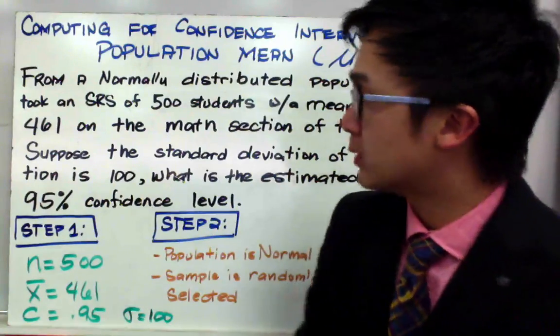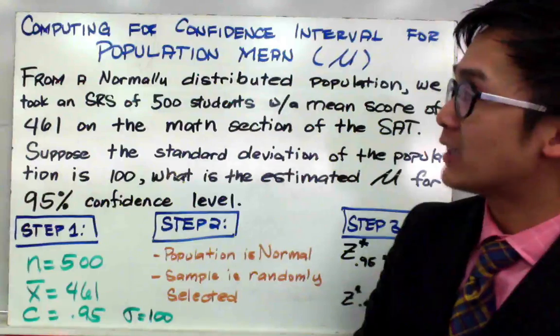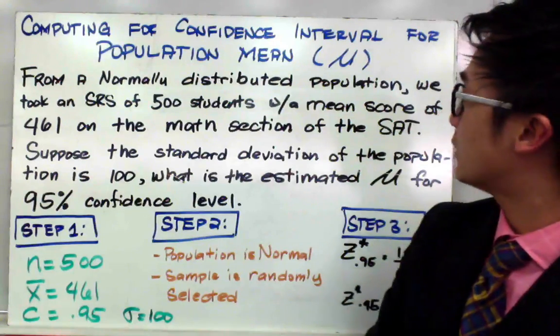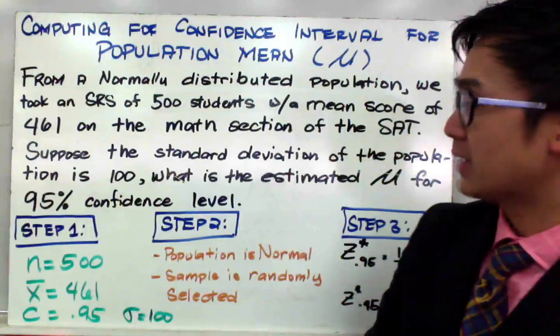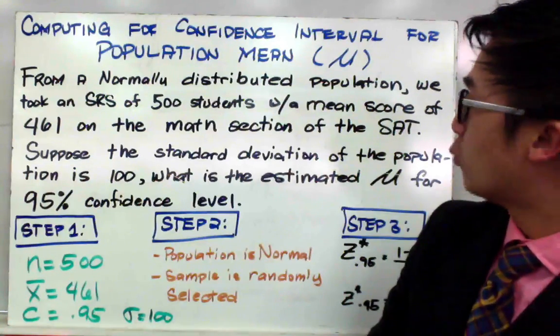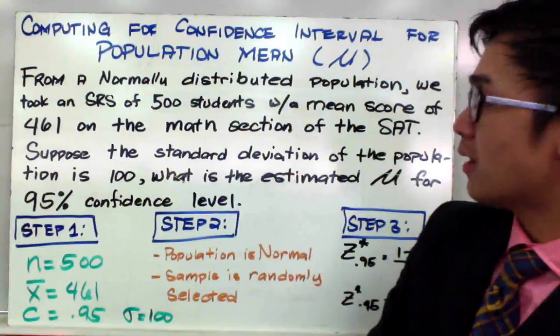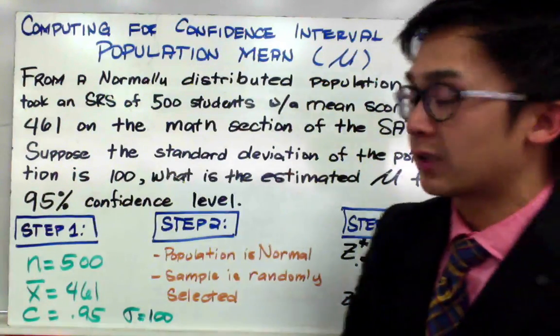Now for this word problem, from a normally distributed population, we took an SRS of 500 students with a mean score of 461 on the math section of the SAT. Suppose the standard deviation of the population is 100, what is the estimated mean for the 95% confidence level for this particular population?